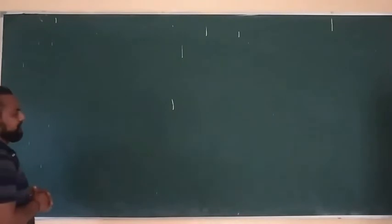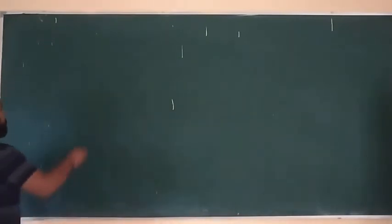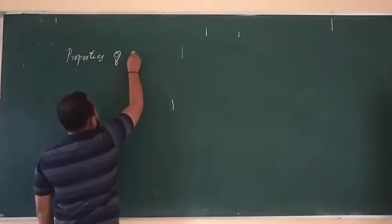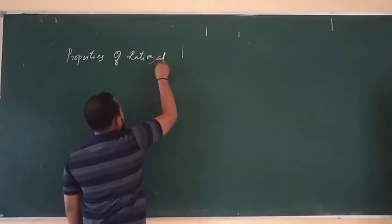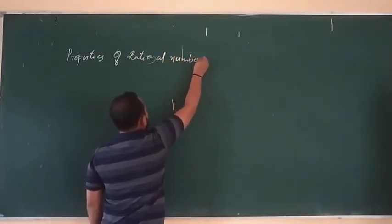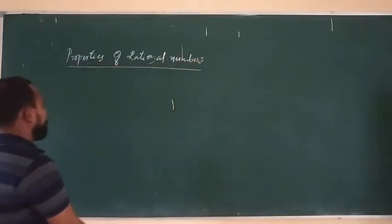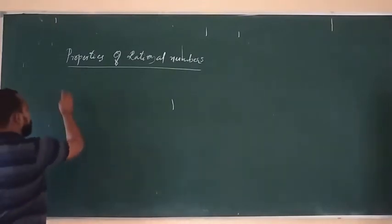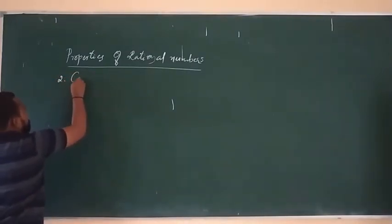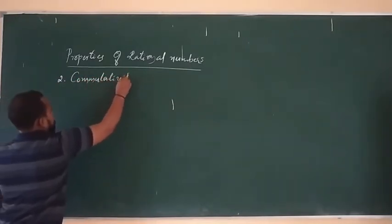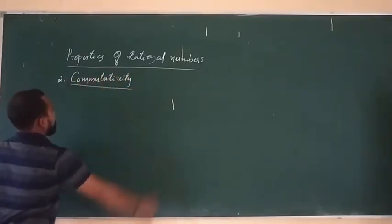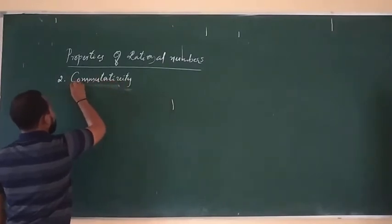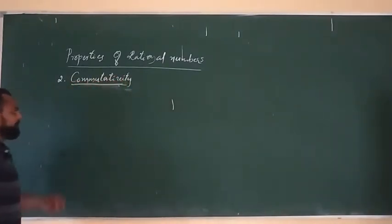Then the second property — the commutative property. Today we are going to discuss about the commutative property, which is the second property of rational numbers.